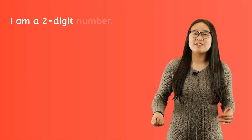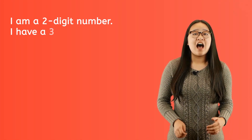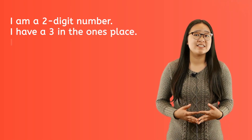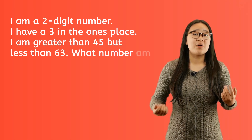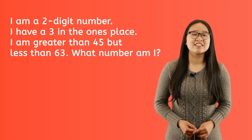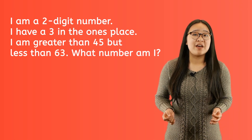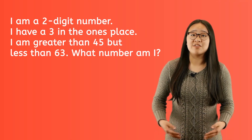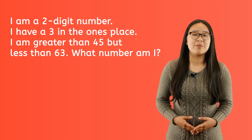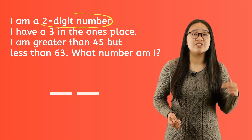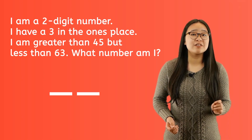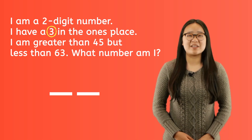Let's look at an example to understand how to guess and check. I am a two-digit number. I have a three in the ones place. I am greater than 45 but less than 63. What number am I? We know right away that we have to guess the number to solve this problem. We know the final answer will be a two-digit number, and we also know for sure that there is a three in the ones place.